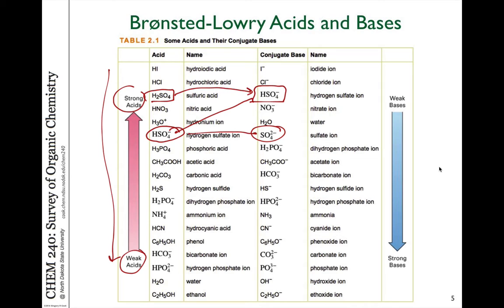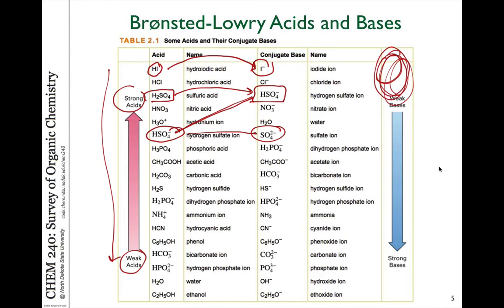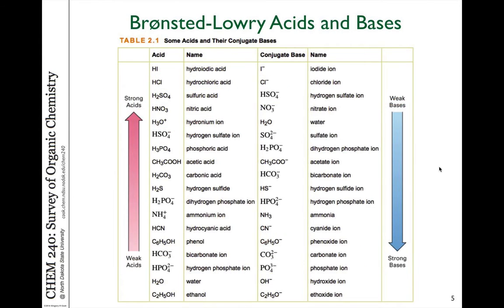HI and its conjugate base I⁻ show that the conjugate base is more stable at the top of the chart. As the acid gets weaker, the conjugate base is less stable and more reactive. For example, water is a weaker acid than hydrochloric acid, so if you mix them, water will behave as a base to deprotonate HCl. HCl will not act as a base and take a proton from water.